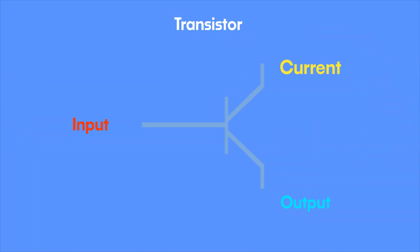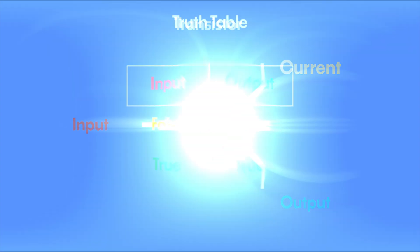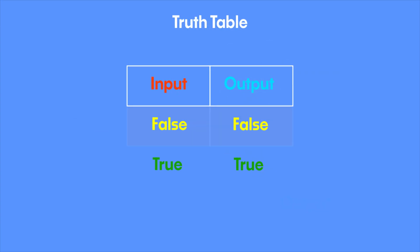A transistor is the basis of all modern computing. Two electrodes and a switch acting in cooperation with current is what generates the goodness on your computer screen. When the current in the input wire is off, the current in the output wire is also off. However, when the current in the input wire is on, then the current in the output wire is also on. This can be represented as binary or true and false values in a truth table.